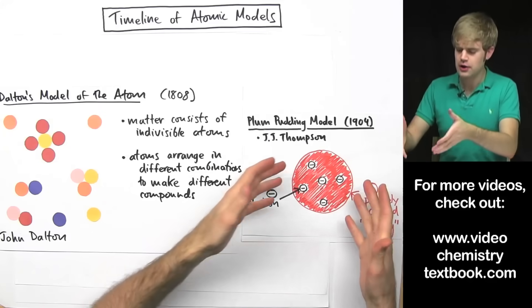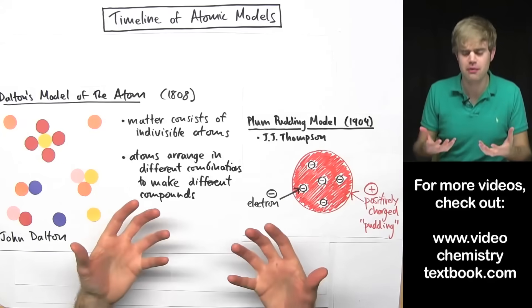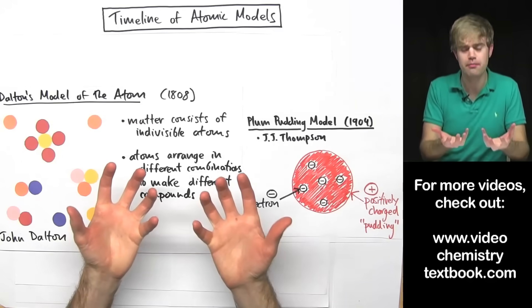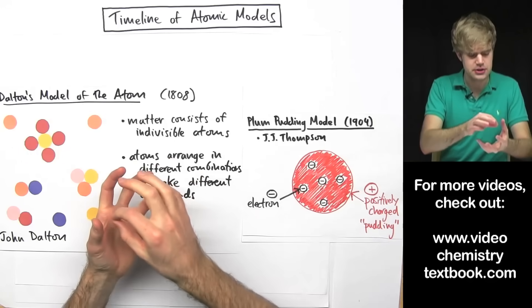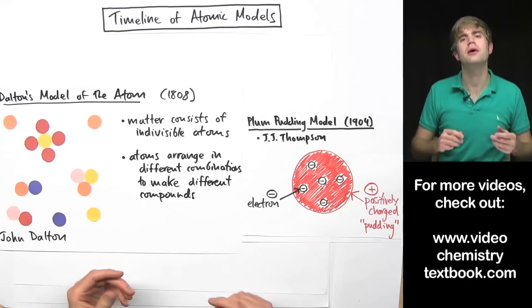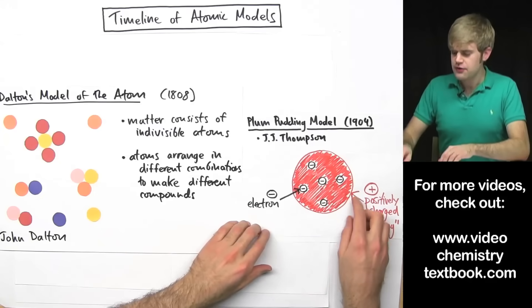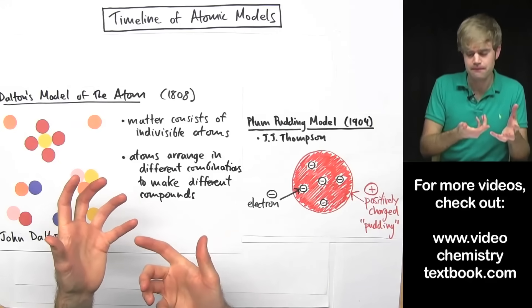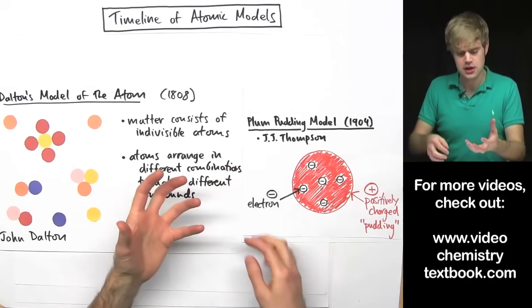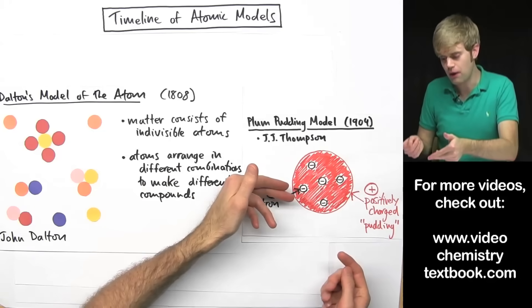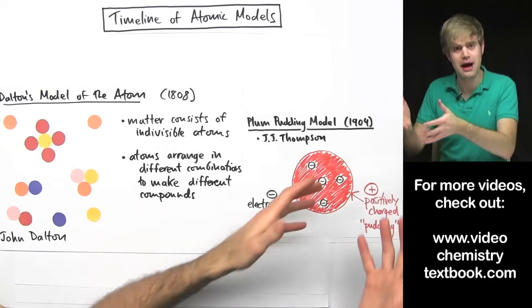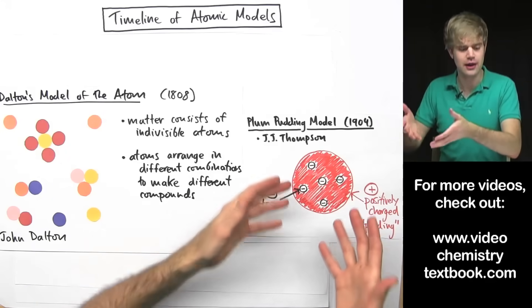So J.J. Thompson pictured the atom as sort of like a blueberry muffin. He called this the plum pudding model. J.J. Thompson imagined that if you took an atom and split it open, you'd see tiny electrons stuck throughout the inside of it just the way blueberries are stuck in the dough of a blueberry muffin. And Thompson thought that what's the dough in a blueberry muffin? That it was like a positively charged substance. So you had negative electrons stuck in like a positively charged dough. And together the positive and negative charge balanced, the two things balanced each other out so that the atom was electrically neutral.